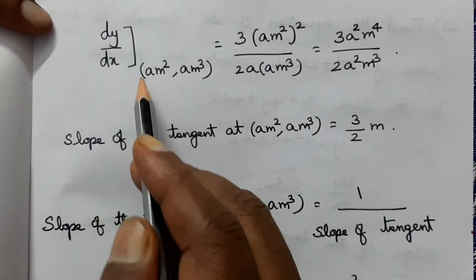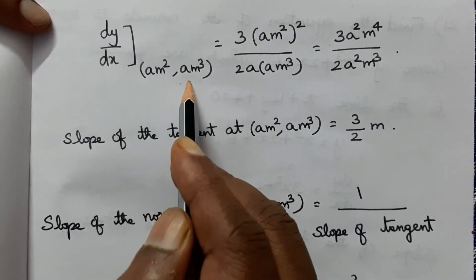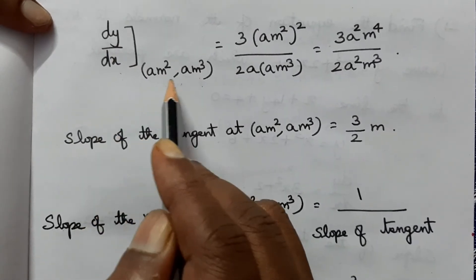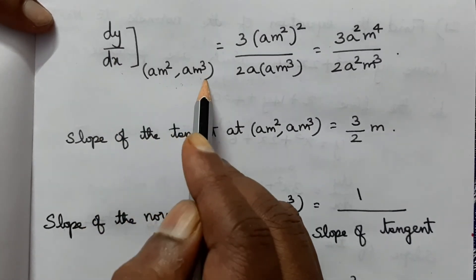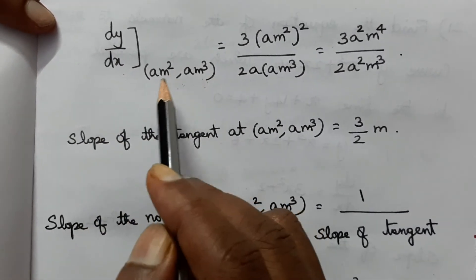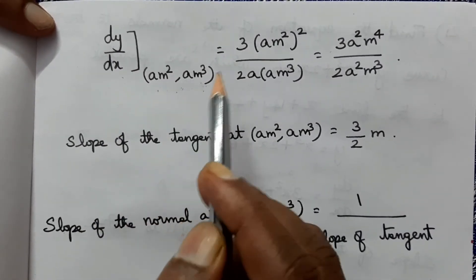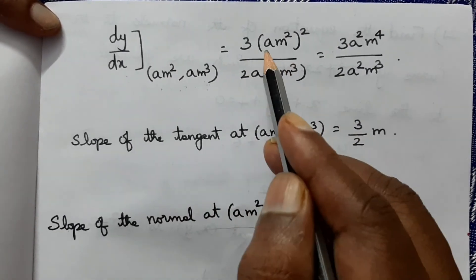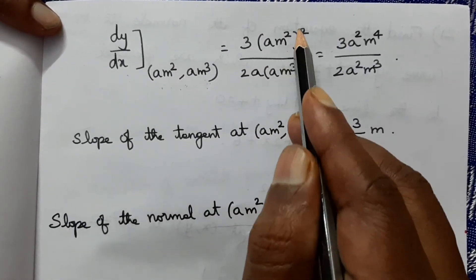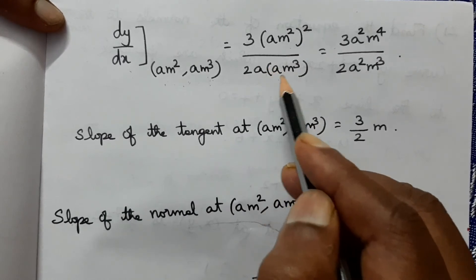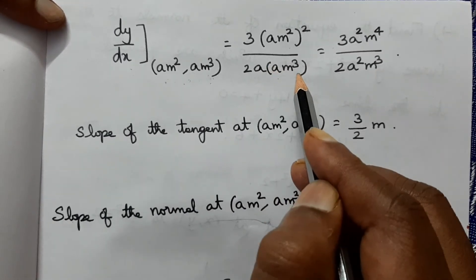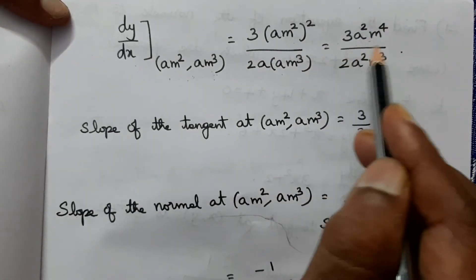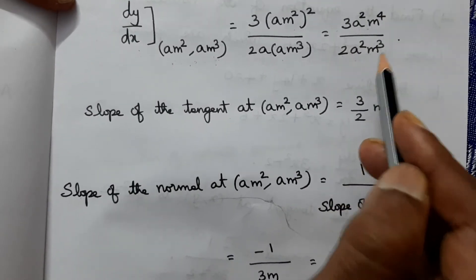At the point (am², am³), substituting x = am² and y = am³: dy/dx = 3(am²)² / (2a × am³) = 3a²m⁴ / (2a²m³) = 3m/2. So the slope of the tangent is 3m/2.